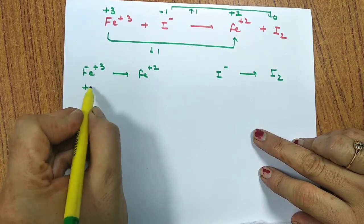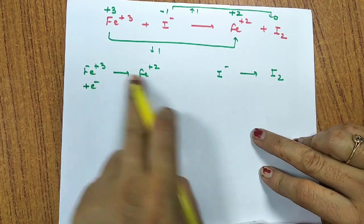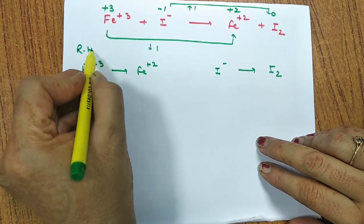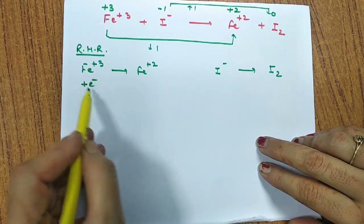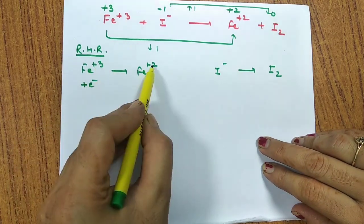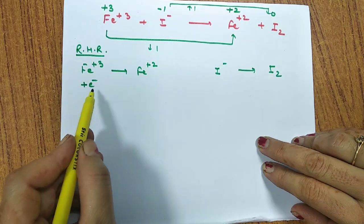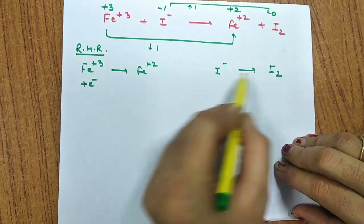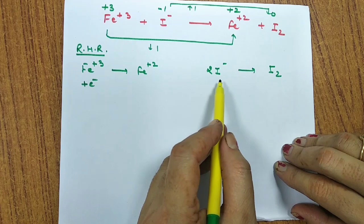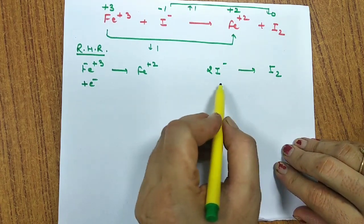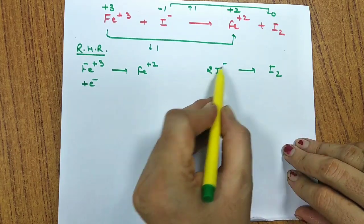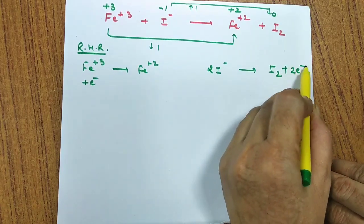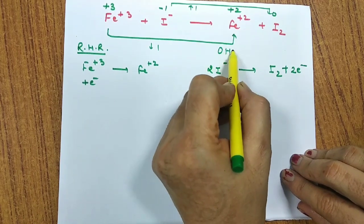Now we balance the charge by adding electrons. Since Fe³⁺ → Fe²⁺ is the reduction half reaction, we add one electron to the left side — the difference between +3 and +2 is 1. For the oxidation half reaction 2I⁻ → I₂, the left side has -2 charge and the right side has 0, so we add 2 electrons to the product side.